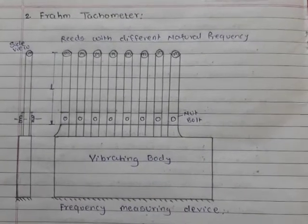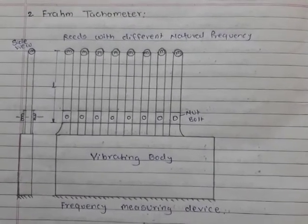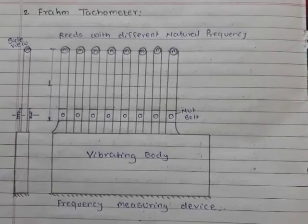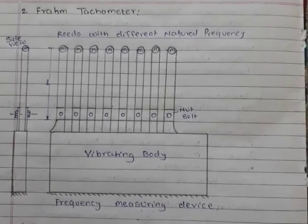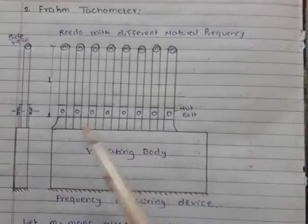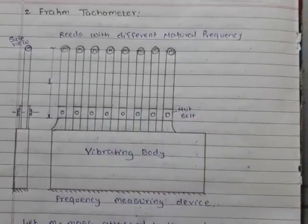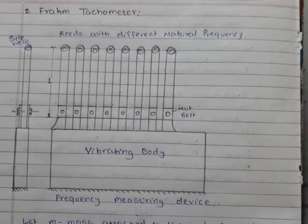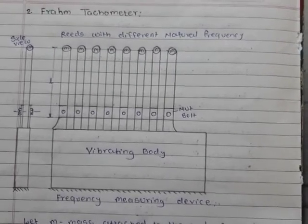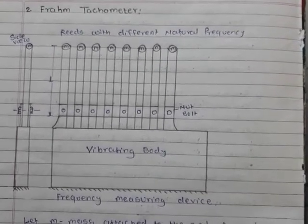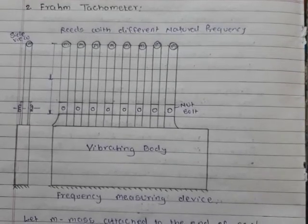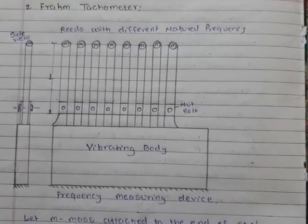Now second, Frahm tachometer. This is also known as a multi-reed instrument. It consists of several reeds of known different natural frequencies. There may be a known series of frequencies for the reeds. Small difference in the frequencies of successive reeds will show more accurate results.